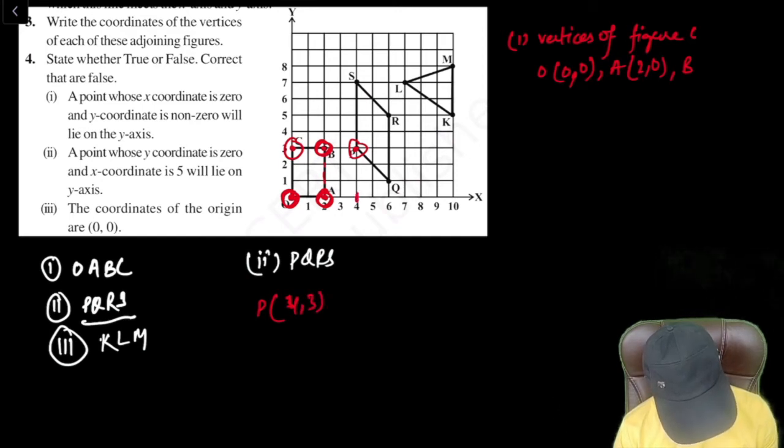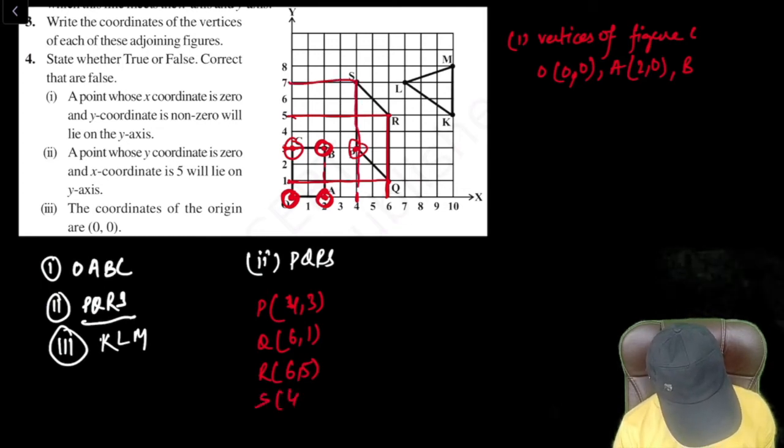4 on X axis and 3 on Y axis. Q: 6 on X axis, 1 on Y axis, 6,1. Now if I say R, it is 6,5. And S is 4,7.